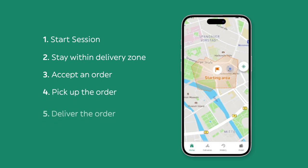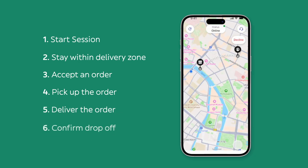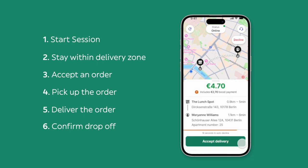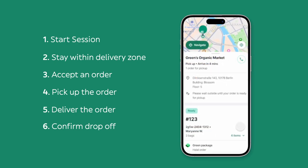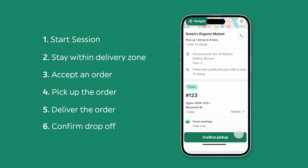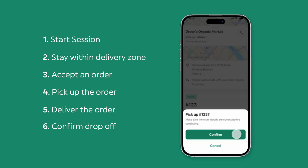Orders will start appearing on the home page. Click on the Accept Delivery button. You will then see the pickup address. Go to the restaurant and click on the Arrived at Vendor button. Inform the vendor of the order number, and once they give you the order, click on the Pick Up button. You will now be able to see the customer's address details. Once there, click the Arrived at Customer button, and then Confirm Drop-off when the delivery is completed.